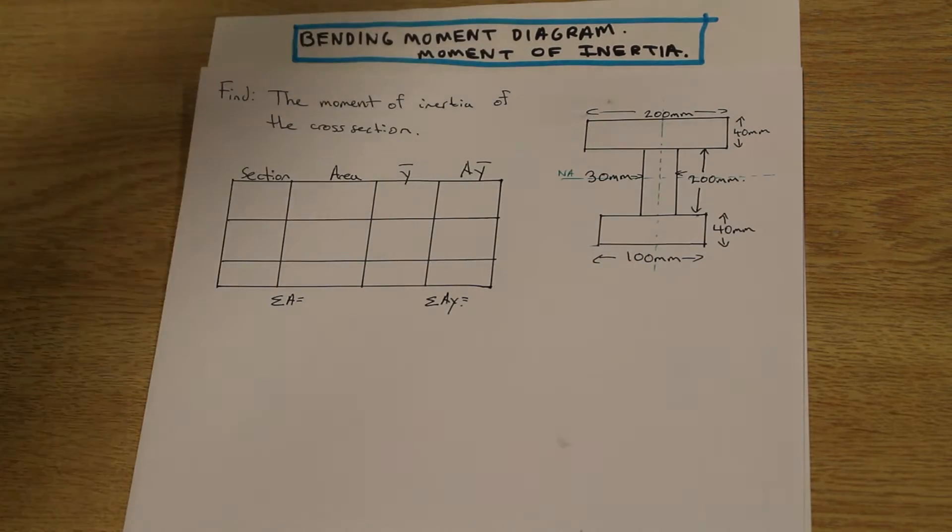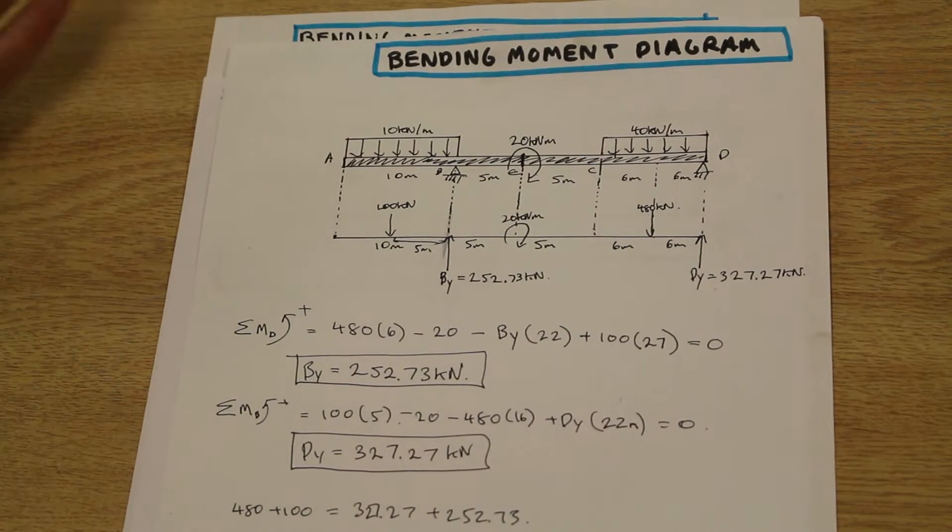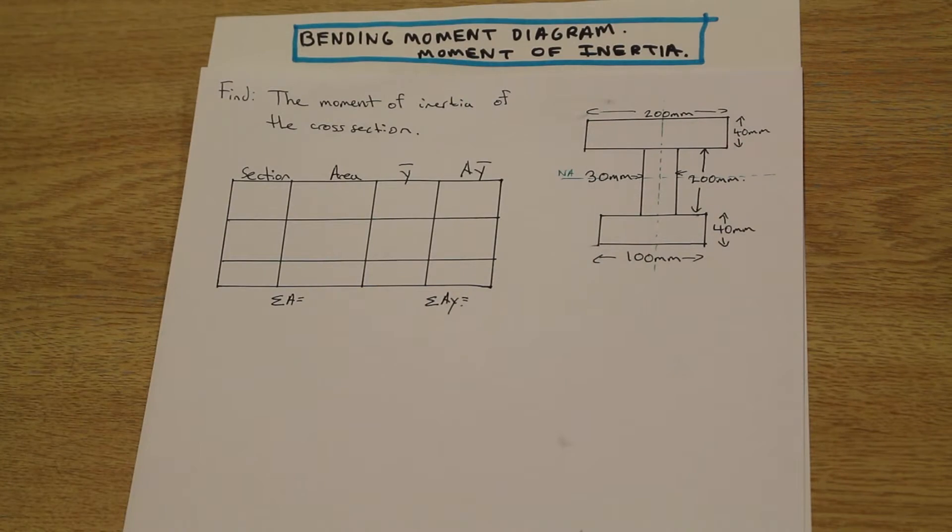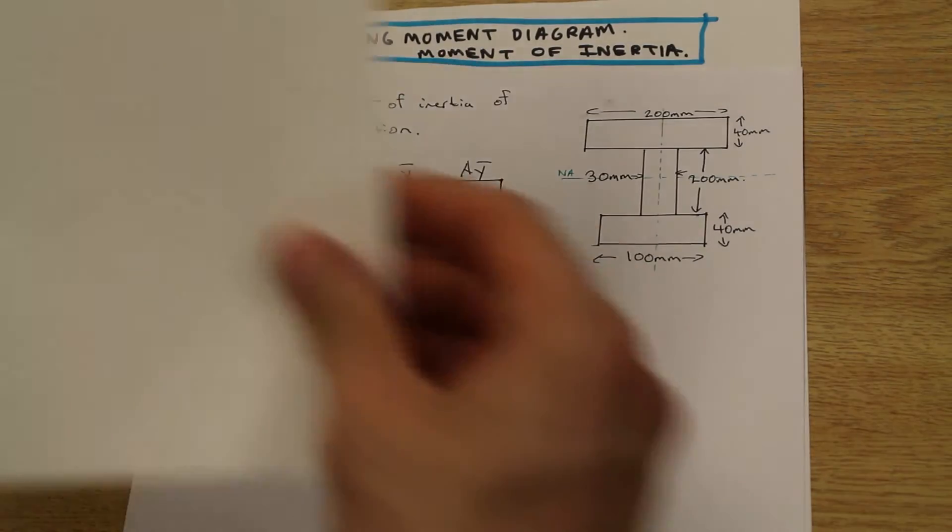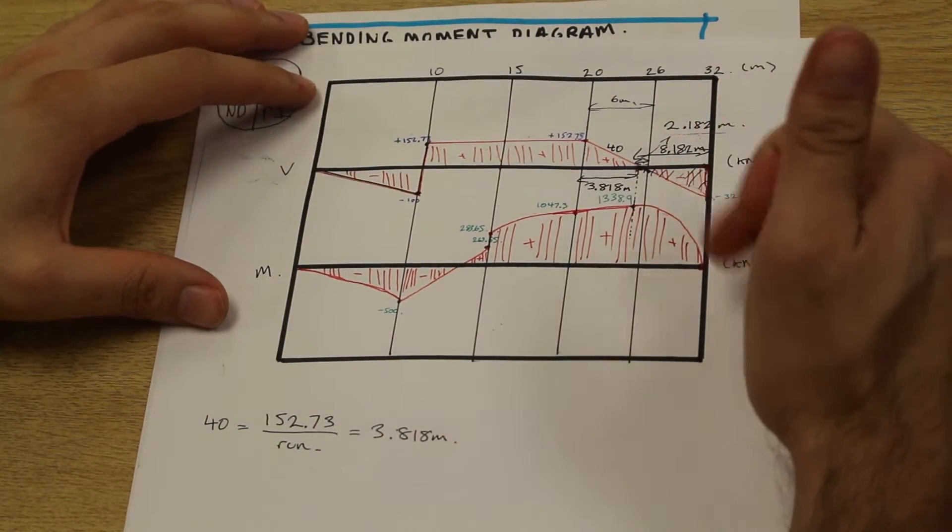What have we done so far? Well, we had a beam with a multitude of different loadings and we solved for the reactions from right here, and then I showed you how to use the area method of the shear diagram to calculate the moment.